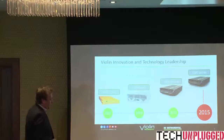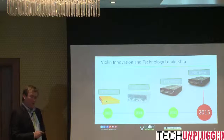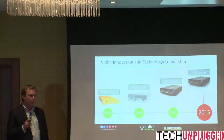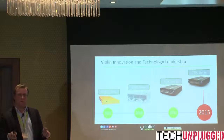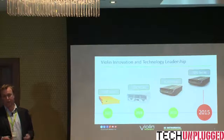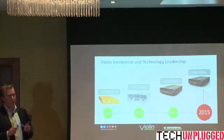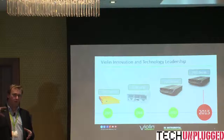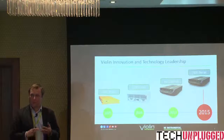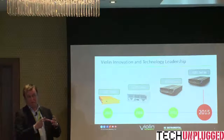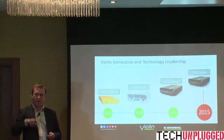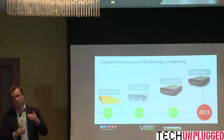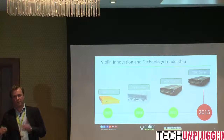We started out in 2005 with a DRAM-based array, the 1000 series, then evolved that into Flash memory. Flash became really popular and manufacturing output went up because of consumer devices — smartphones, tablets — all of which drove the amount of capacity fabrication plants were producing. Once that happens, cost starts to come down. So when you look at emerging memory technologies, their price is likely to be quite high to begin with until they get adopted in the consumer market.